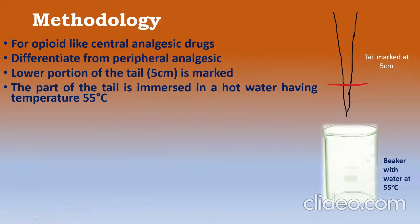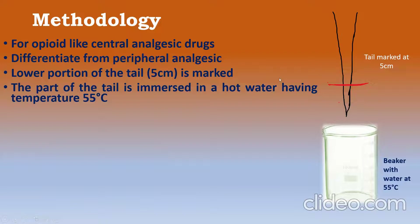In a beaker, you keep water at a temperature of 55 degrees centigrade, which can be maintained by a thermostat or any manual apparatus. This 5-centimeter portion of the tail is immersed into this water, and as soon as you observe removal of the tail, that is considered the endpoint of the reaction.